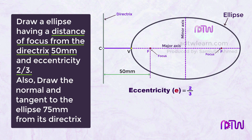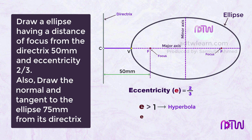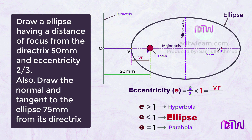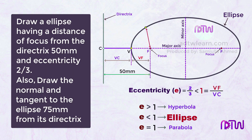If the value of eccentricity is more than 1 we get a hyperbola; if less than 1 we get an ellipse; and if equal to 1 we get a parabola. In this case it is less than 1, so it is an ellipse. Eccentricity is the ratio of the distance of a point on the ellipse from the focus to the distance of the same point from the directrix. So for any point on this ellipse, that ratio will equal 2 by 3.